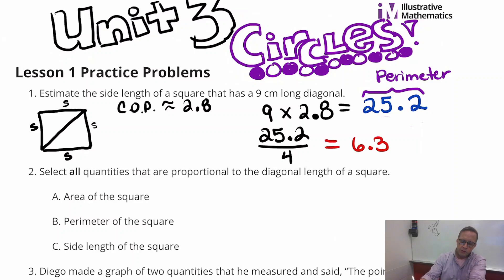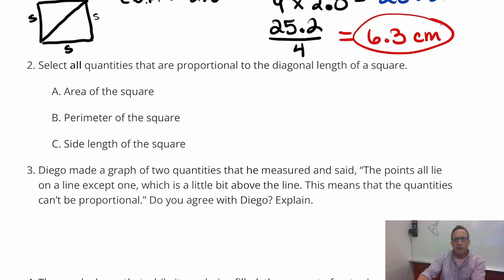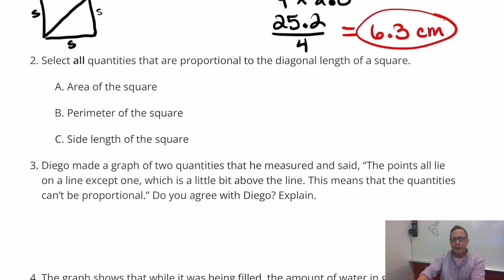So 6.3 centimeters. Now for number two, select all quantities that are proportional to the diagonal length of a square. Again, this kind of goes back to the lesson as well.